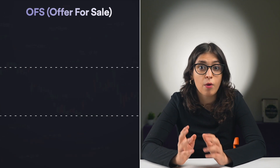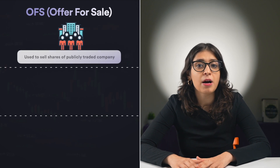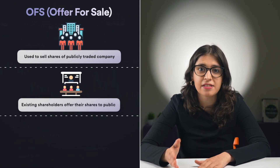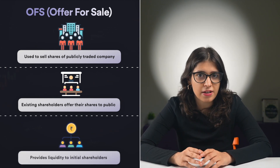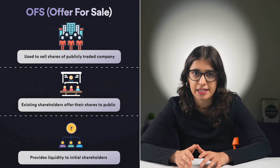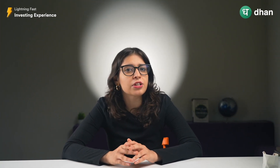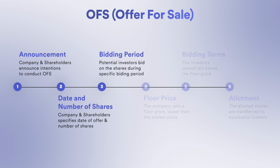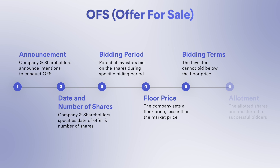Now let's look at another concept: Offer for Sale, or OFS. This mechanism is used for selling shares of a publicly traded company. In an OFS, a company's existing shareholders — such as promoters, founders, and early investors — offer their shares for sale to the public. This process gives initial investors and promoters liquidity, allowing them to monetize their investment holdings. These shares are usually offered at a discounted price compared to the prevailing market price. For an OFS, the company and selling shareholders first announce the intention to conduct an OFS, specifying the offer date and number of shares. After that, there is a specific bidding period during which potential investors can submit their bids on the stock exchange. The company sets a floor price, which is usually at a discount to the prevailing market price, and investors cannot bid below this floor price.